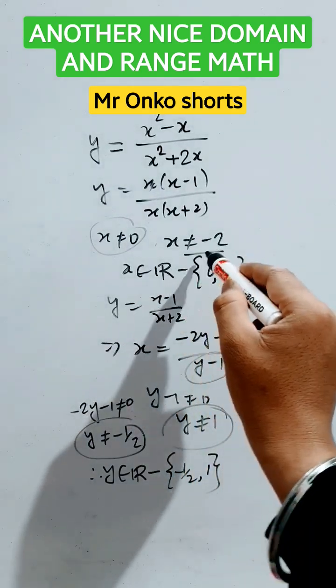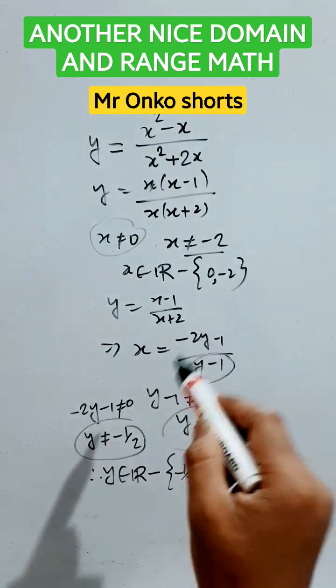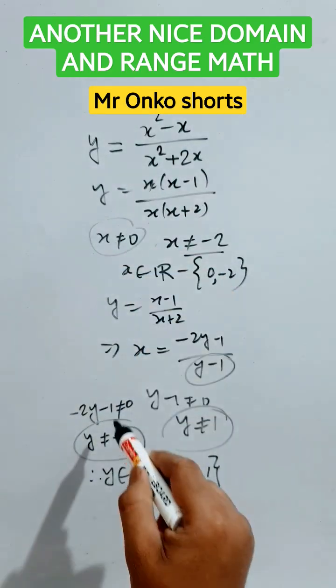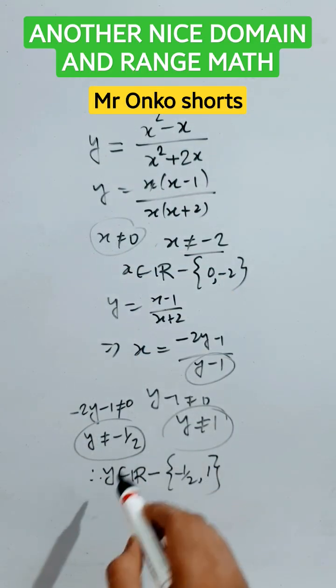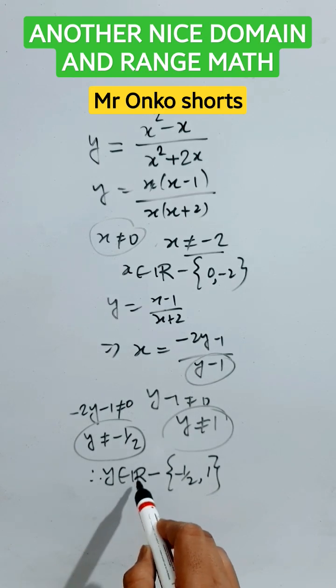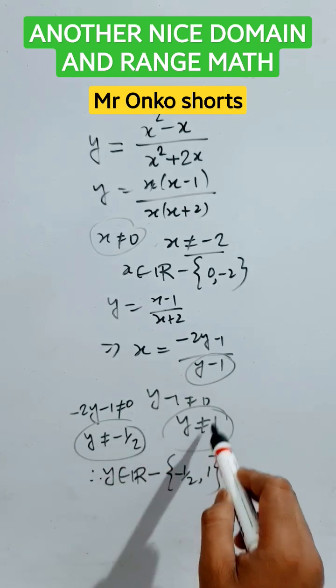On the other hand, if we put x not equals to minus 2 here, we will not get any valid value. But if we put x not equals to 0, we will get y not equals to minus half. So y belongs to real number set only except minus half and 1. This is the end.